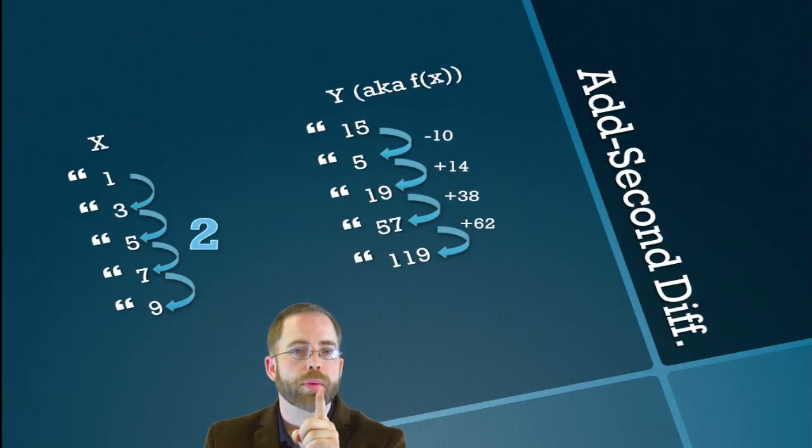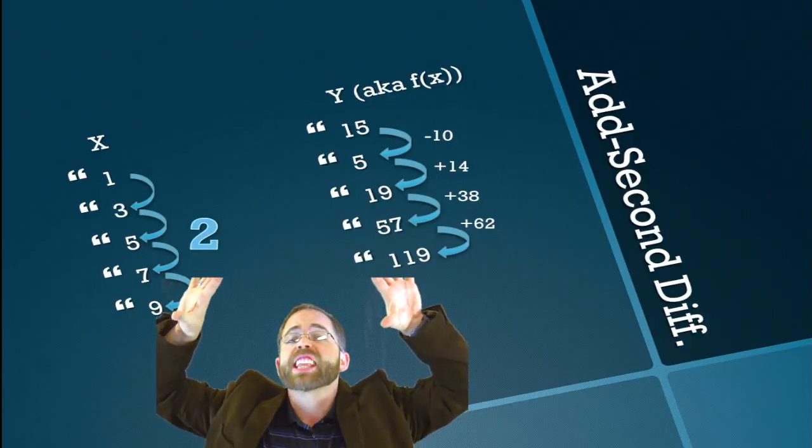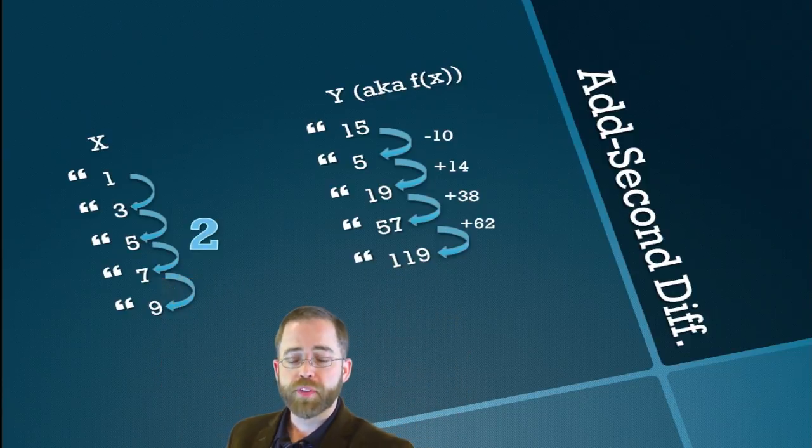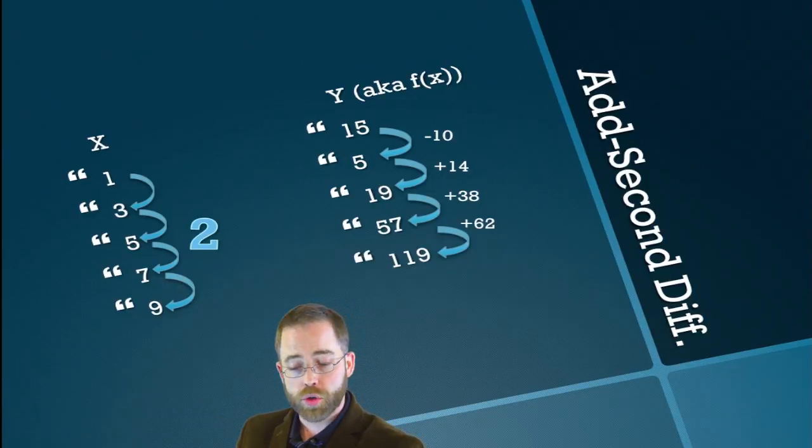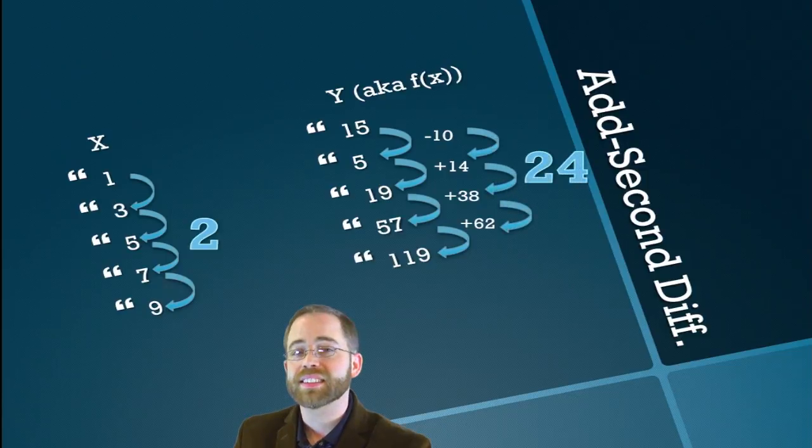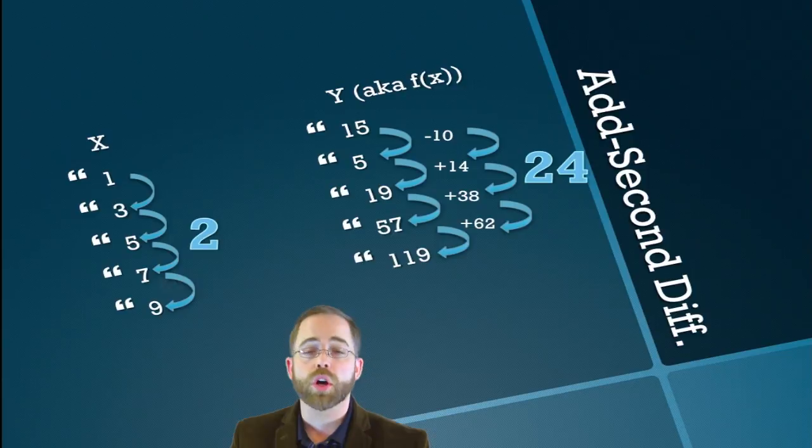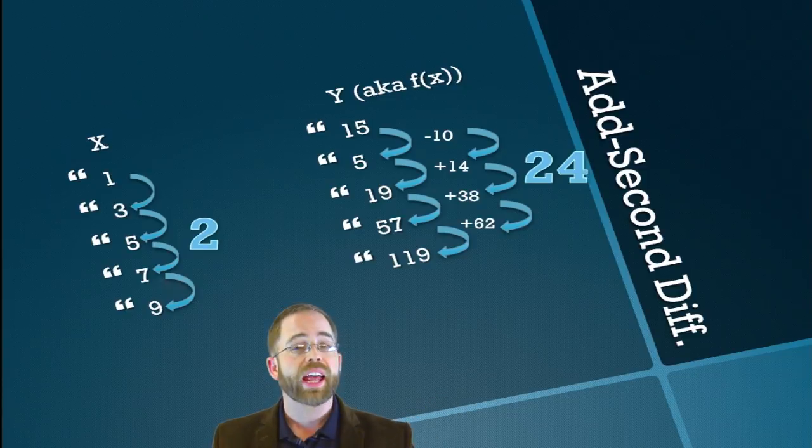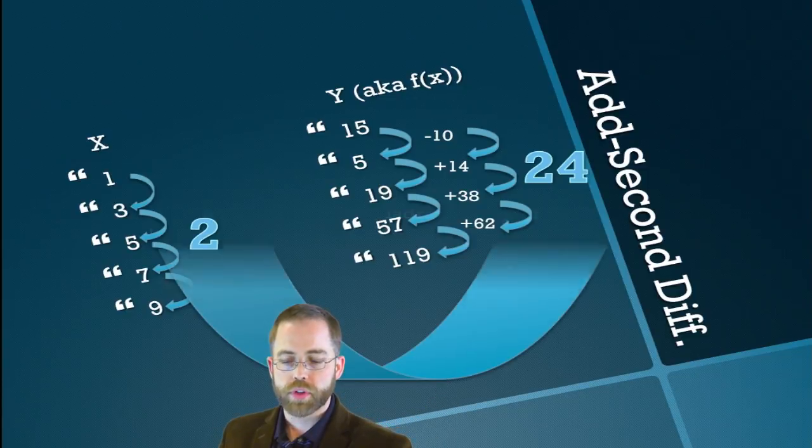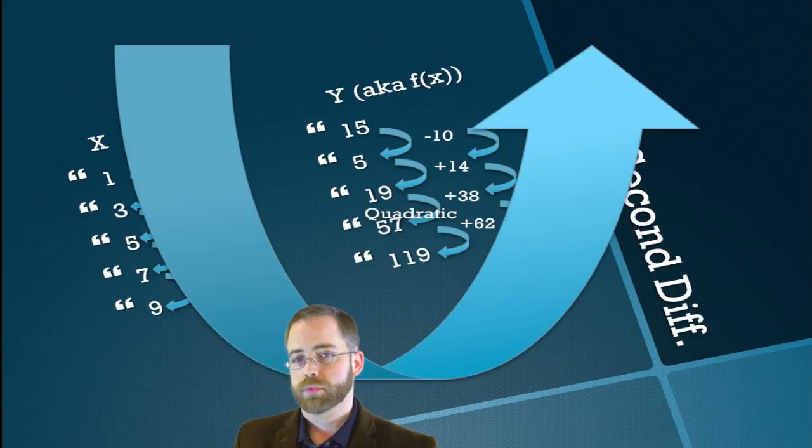But there's no pattern there. But there's a pattern to the pattern. Take it to the next level here. So if I look at all of these numbers that I just calculated and I find the difference among those, then I get a consistent picture of going up by 24 every time. So not very inventively, this pattern is named add-second-difference. And it is what is true of a quadratic function.